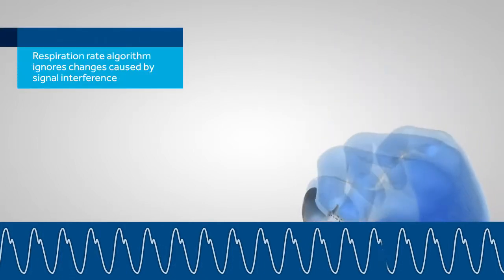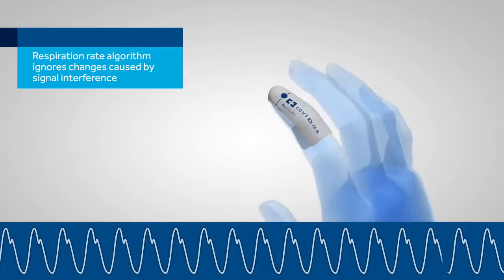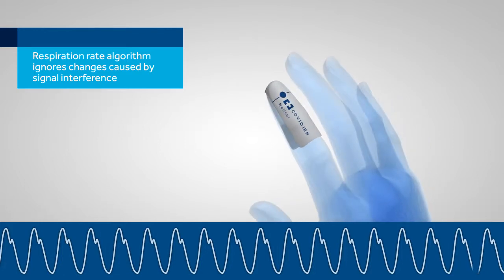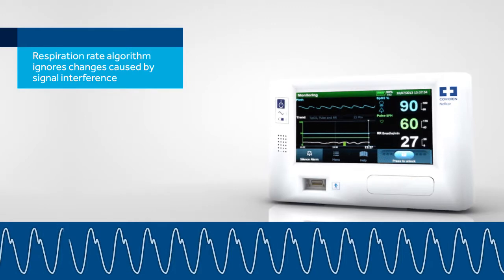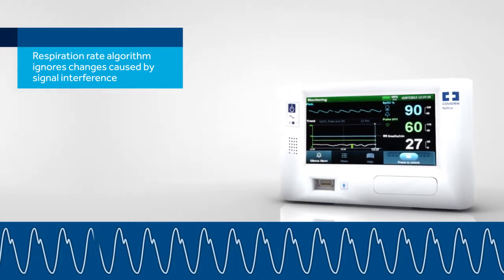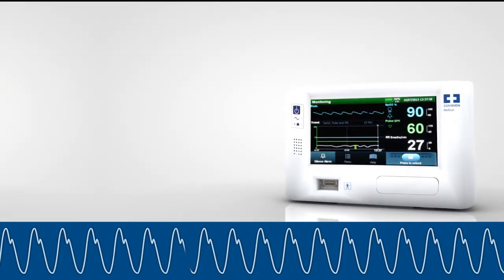This signal interference may be recognized because the signal changes are distinct compared to those of the respiratory cycle. If at any time the pulse oximeter reports zero due to dropout or sensor disconnect, the entire respiration rate algorithm is reset.